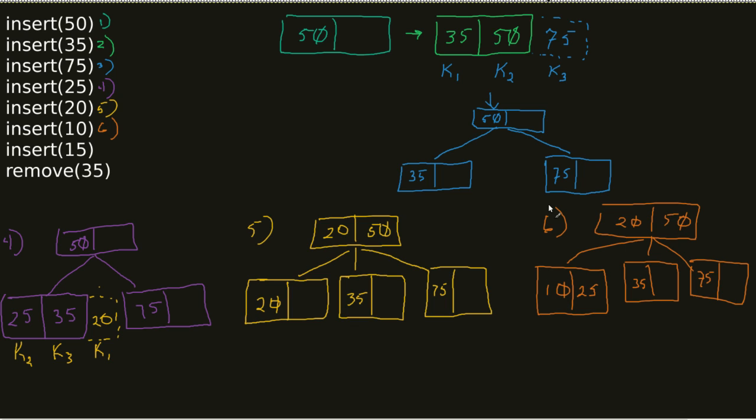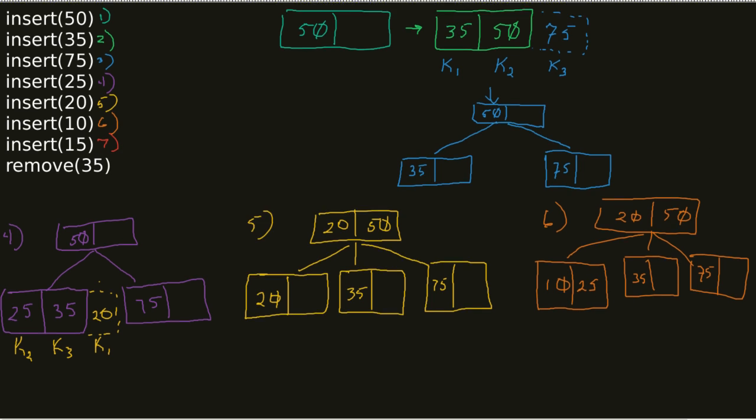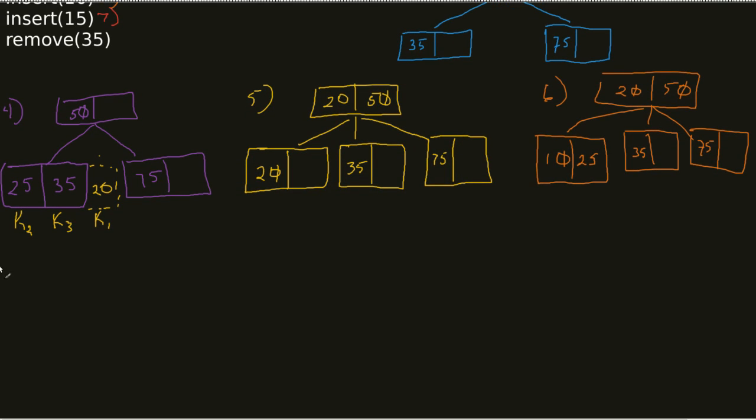So now we get into the issue of I need to delete 35, right? Deleting 35 is a little more, actually sorry, I'm jumping ahead. I've got to insert my 15 as well. So in this case, I'm going to just scroll down a little bit. So for this number 7, I need to insert 15.